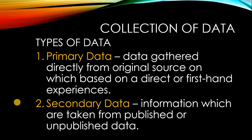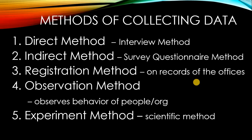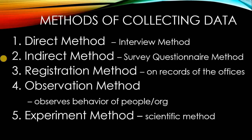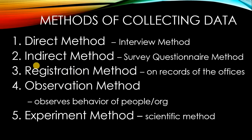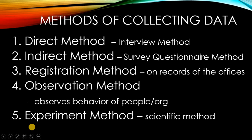In business reports, these are already secondary data when you gather information from those record books. There are methods of collecting data. We have the direct method — normally the interview method, a face-to-face or one-on-one interaction. The indirect method is the normal method used in educational research. Third is the registration method, where you get information from records in government offices or private organizations. The fourth is the observation method, normally done by psychologists to observe behavior of people or organizations. The fifth is the experiment method, normally done by scientists or physicists using the scientific method.